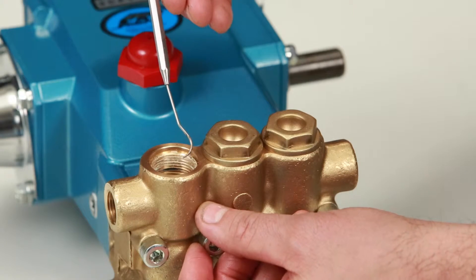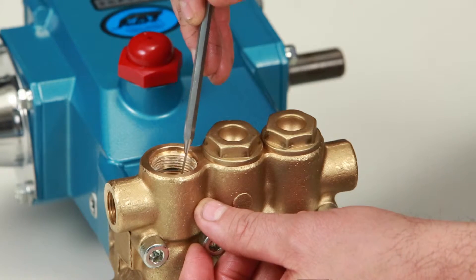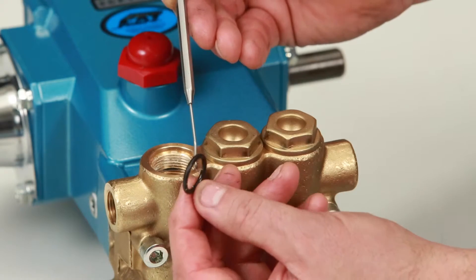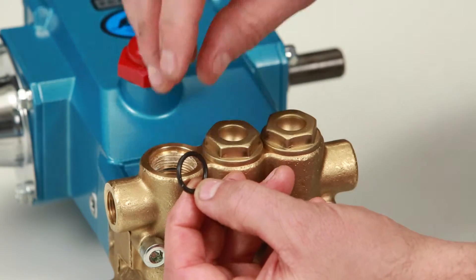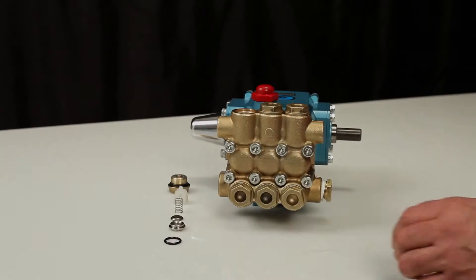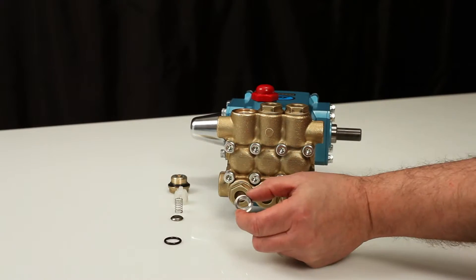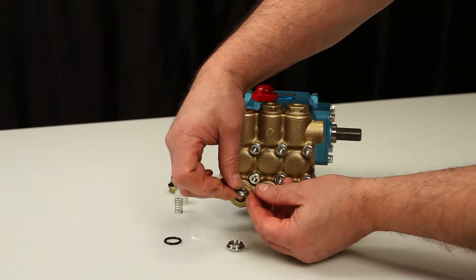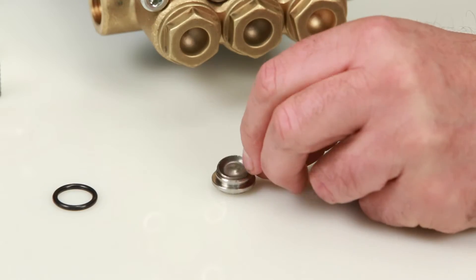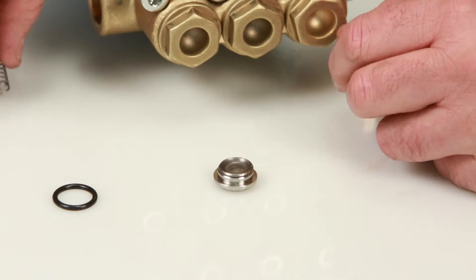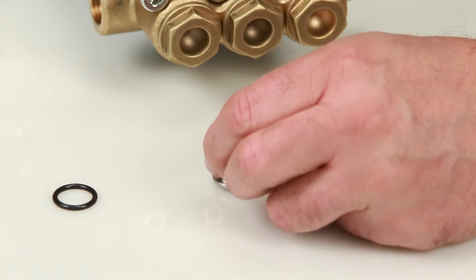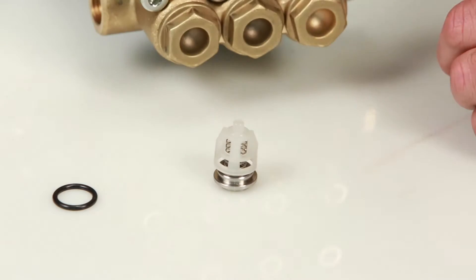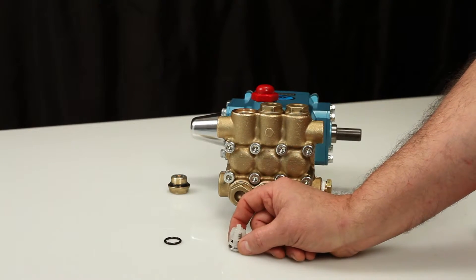Remove the O-ring from the manifold using a small screwdriver or pick. Inspect for cuts or nicks. To reassemble the valve assembly, place the valve seat on a flat surface with the tapered surface facing up. Place the valve onto the valve seat with the tapered surface facing down. Place the spring on the valve, followed by the spring retainer. Using a rubber hammer, lightly tap into place.